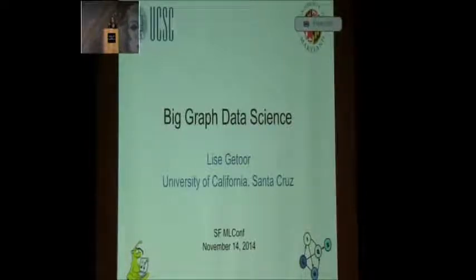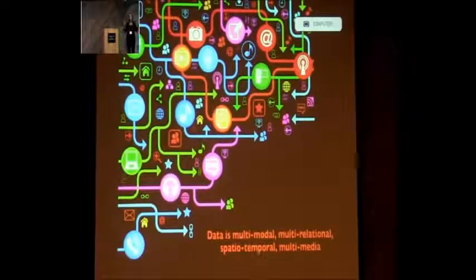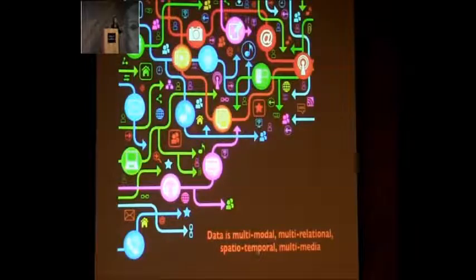I'm going to be talking about big graph data science. One of my first points is that data is not flat — in particular, big data is not flat. Data is multimodal, multirelational; there are all kinds of entities and relationships, spatiotemporal, multimedia. Data is very rich and complex, and right now a lot of machine learning approaches take this originally graph data and turn it into a matrix.